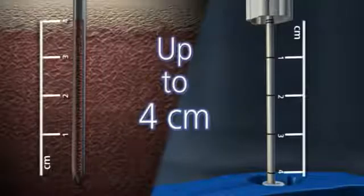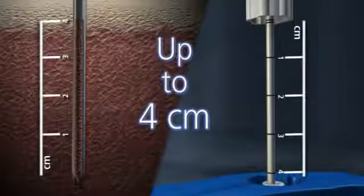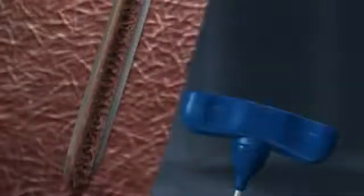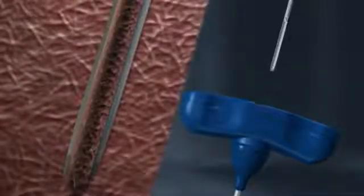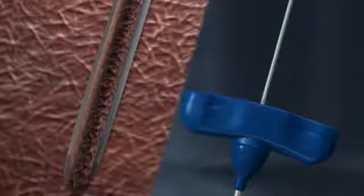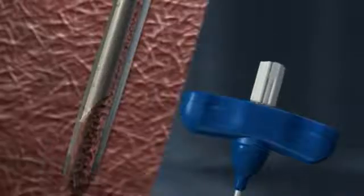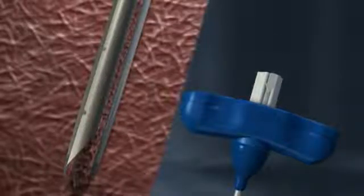The Jamshidi needle and cradle allow you to obtain sample lengths of up to 4 centimeters. Once the sample length has been identified, the marrow acquisition cradle is fully advanced into the crown cannula. The marrow acquisition cradle is rotated 360 degrees, effectively separating the bone marrow core.